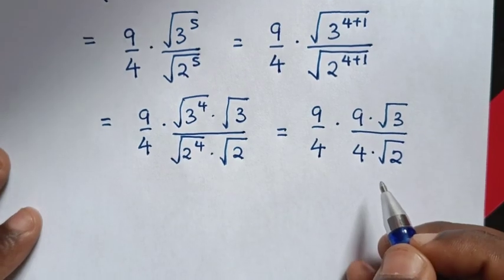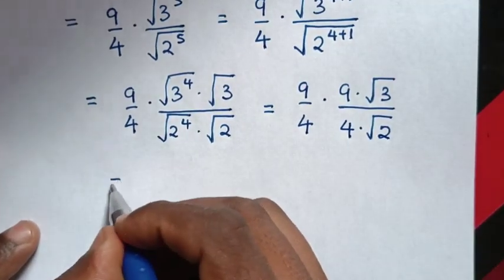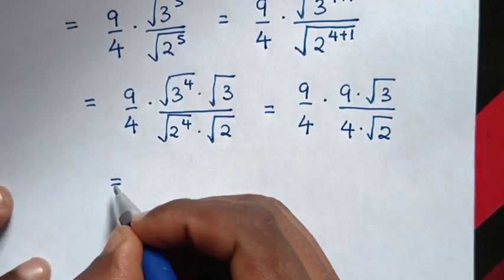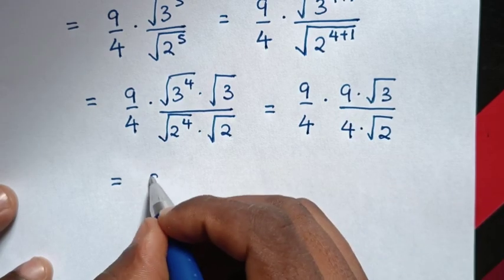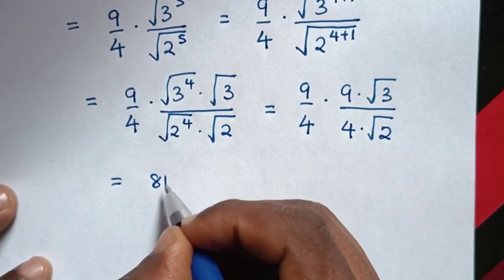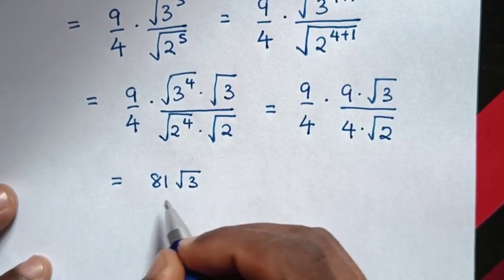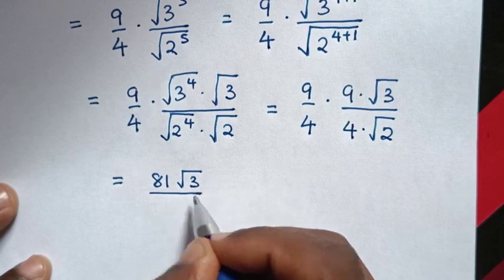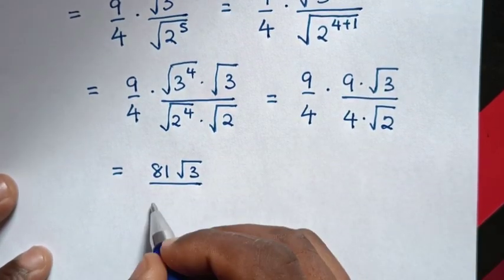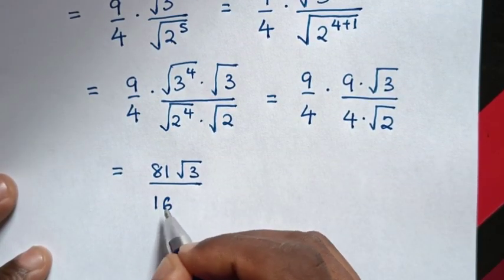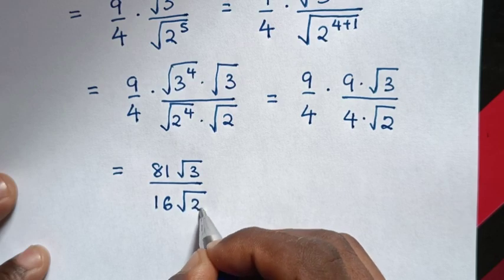Then in the next step, it will be equal to: 9 times 9 is 81, then times square root of 3, over 4 times 4 is 16, then times square root of 2.